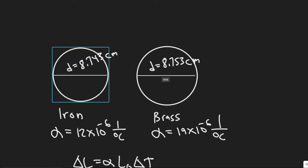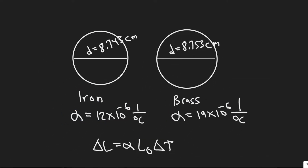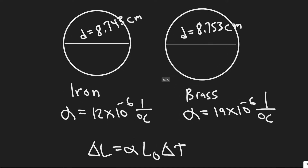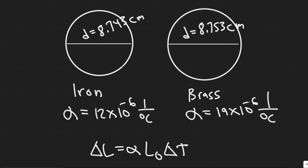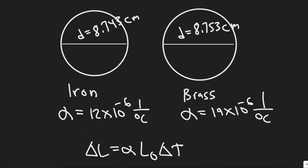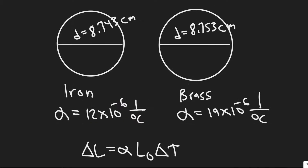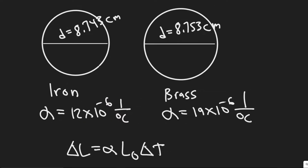There are some things you need to know, which is the coefficient of linear expansion for both of these materials. The coefficient of linear expansion is basically how much they're going to expand or decrease — it's different for every material and it's just a constant. For iron, it's 12 times 10 to the minus 6, and for brass it's 19 times 10 to the minus 6.